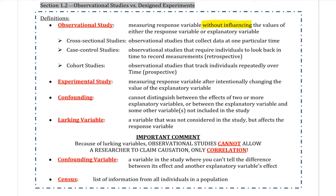With Observational Studies, we have them split up into three different styles — these are the most common ones. Cross-sectional studies are collected at one particular time, done once and then you're done. Most surveys are cross-sectional: you go up to a person, ask them a question, and then you're done. There's nothing more done after or before that.